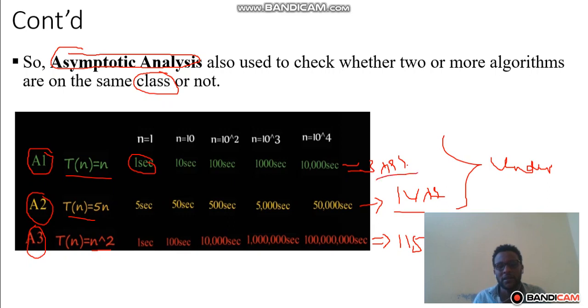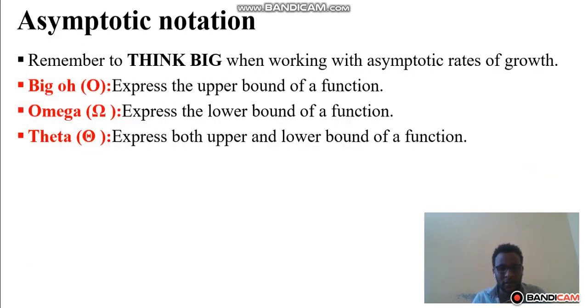Another important topic is asymptotic notations. Remember to think big when working with asymptotic rate of growth. There are three notations. Big O notation expresses the upper bound of a function. Omega notation expresses the lower bound of a function. Theta notation expresses both upper and lower bounds of the function.